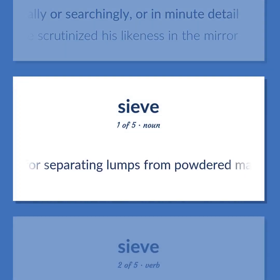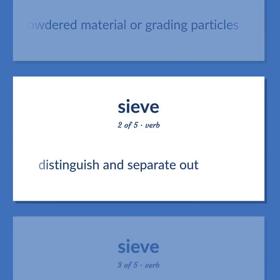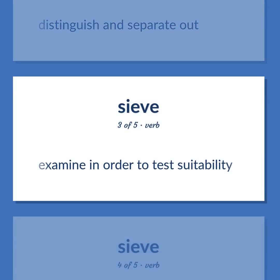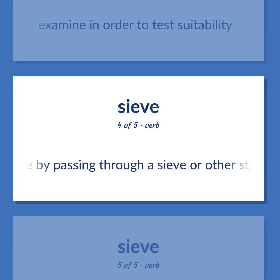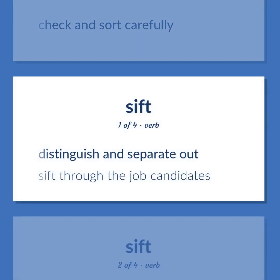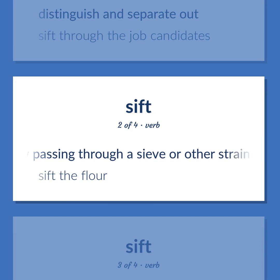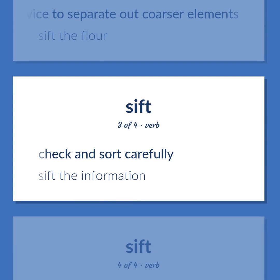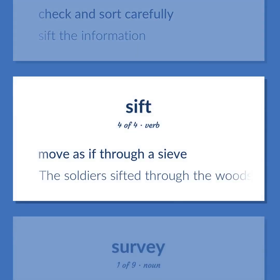Sift. A strainer for separating lumps from powdered material or grating particles. Distinguish and separate out. Examine in order to test suitability. Separate by passing through a sieve or other straining device to separate out coarser elements. Check and sort carefully. Distinguish and separate out: sift through the job candidates. Sift the flour. Sift the information. Move as if through a sieve: the soldier sifted through the woods.